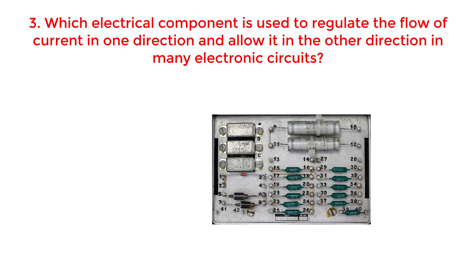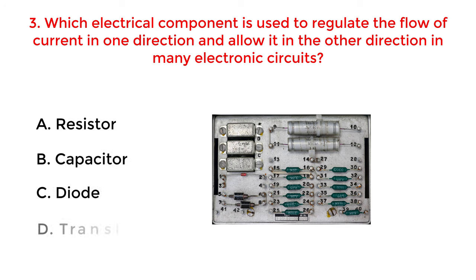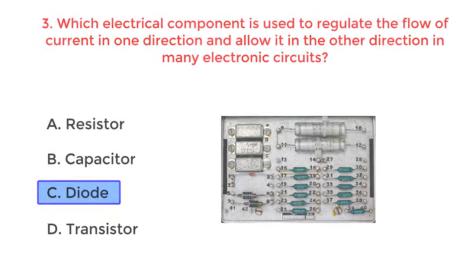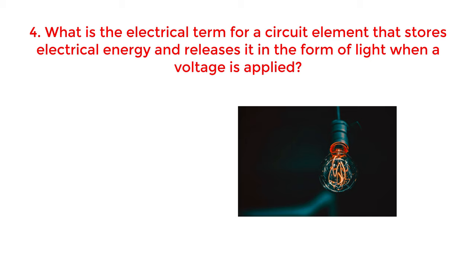Which electrical component is used to regulate the flow of current in one direction and allow it in the other direction in many electronic circuits? A. Resistor. B. Capacitor. C. Diode. D. Transistor. The correct answer is option C: Diode.